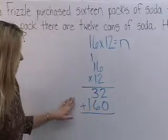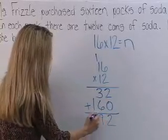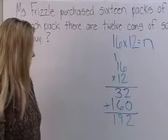Taking our two partial products together, 2 plus 0 equals 2, 6 plus 3 equals 9, 0 plus 1 equals 1 for a grand total of 192.